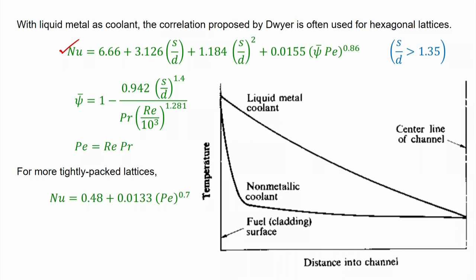The typical temperature distribution across the coolant film differs between coolant types. For non-metallic coolants with low thermal conductivity, the corresponding resistance is large and there is a rapid reduction in temperature very close to the surface. For liquid metal coolants with high thermal conductivity, the temperature changes gradually, almost following a straight-line relationship. These relations apply for single-phase coolants; however, in boiling water reactors there can be a phase change inside the reactor.